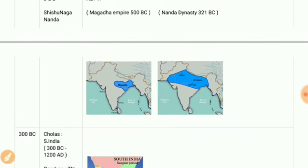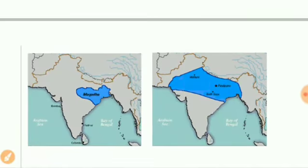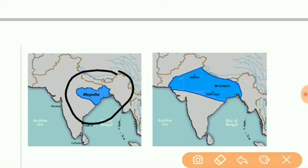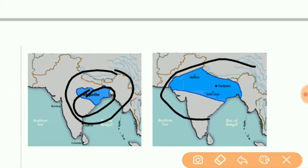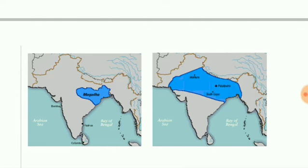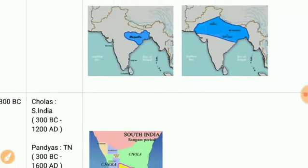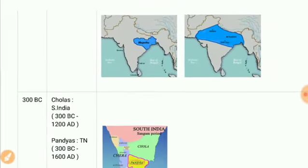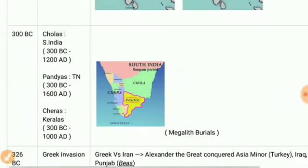Here we have a map of the Magadha region — the northeastern part covering Bihar, Chhattisgarh, and Odisha — including Pataliputra, Bodh Gaya, and Mathura.